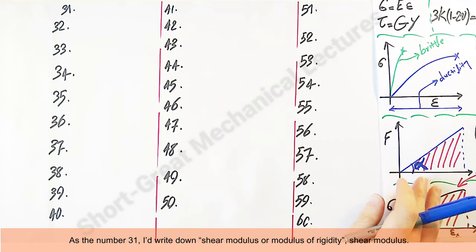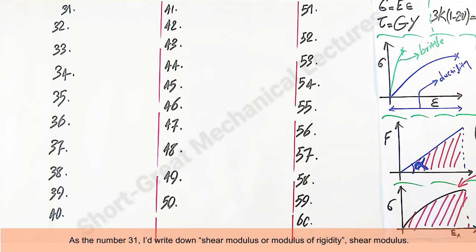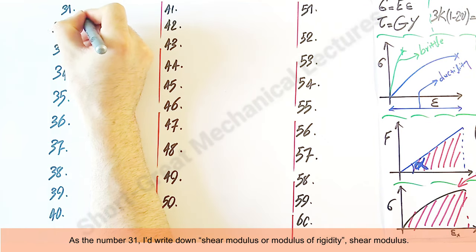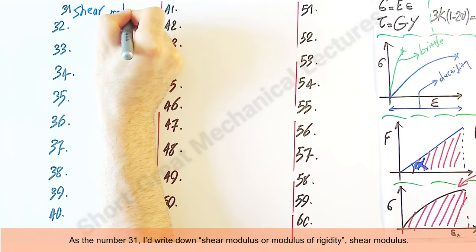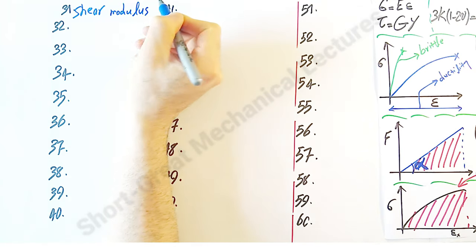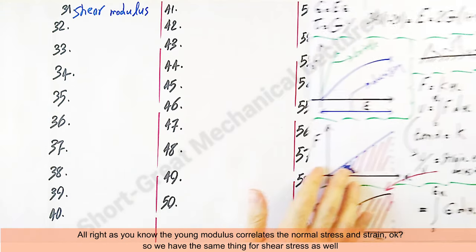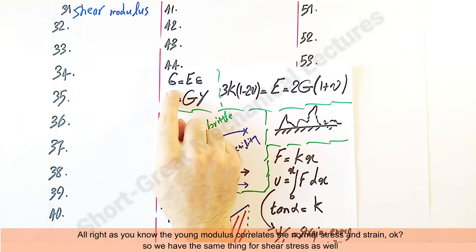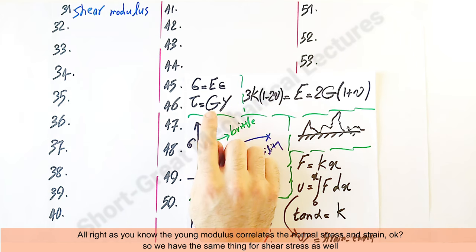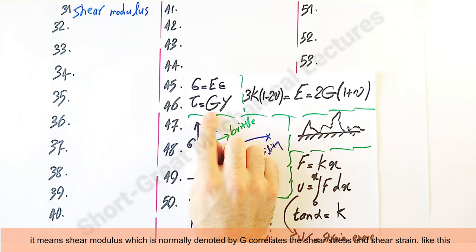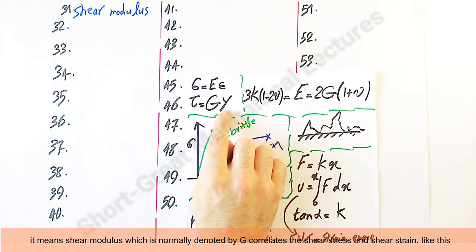All right, as number 31, I'd write down shear modulus or modulus of rigidity. As you know, the Young's modulus correlates the normal stress and strain. So we have the same thing for shear stress as well. It means shear modulus, which is normally denoted by G, correlates the shear stress and shear strain like this.